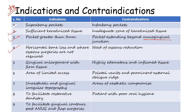If there is horizontal bone loss and osseous surgeries are not required, it is an indication. In case of osseous reduction, gingivectomy cannot be done because in the gingivectomy procedure we do not expose the bone. So all cases which need osseous correction should not be taken for gingivectomy. Gingival enlargement with firm tissue is an indication — there should be firm tissue, so edematous and inflamed tissue is a contraindication. Area of limited access, palatine walls and prominent external oblique ridge — here we cannot reach and cannot do the gingivectomy procedure.